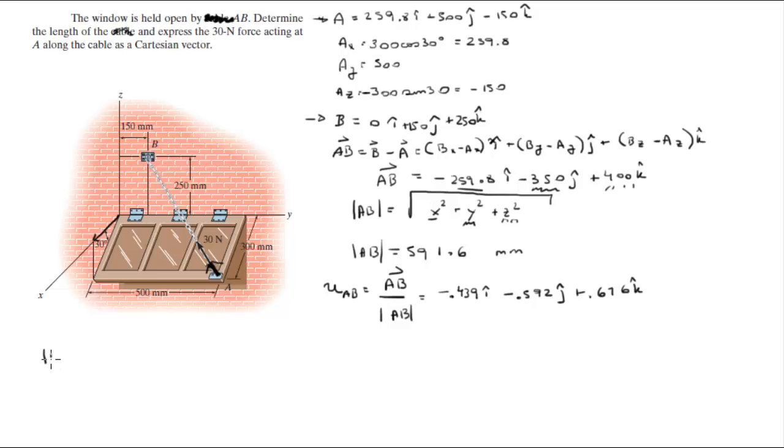Now you know that the magnitude of the force acting on the chain is equal to 30 newtons. So if you want to find the Cartesian vector form, you multiply the magnitude by the unit vector direction that we just found. And that is equal to negative 13.17 I minus 17.76 J plus 20.28 K. Basically you multiply this unit vector by the magnitude and you get the Cartesian vector form of the force. Final answer.